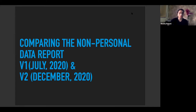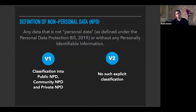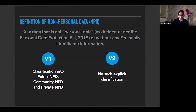A basic overview of the two versions of the report: the first version was out in July 2020 and the second version was out in December 2020. The definition of non-personal data under the two versions of the report stays the same — any data which is not personal data as defined under the Personal Data Protection Bill of 2019, or data which is without any personally identifiable information. In version one, NPD was further divided into three categories: public NPD, community NPD, and private NPD.